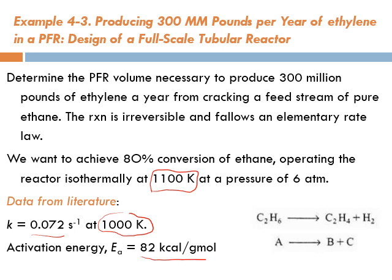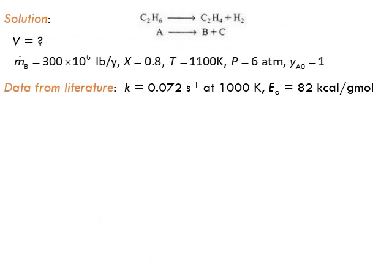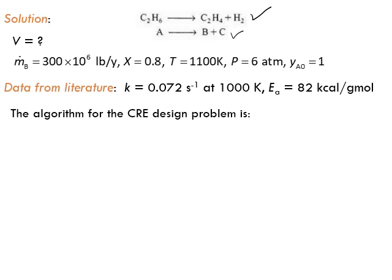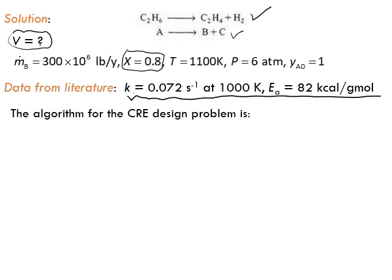Let's summarize the problem. The reaction is the cracking of ethane to ethylene and hydrogen. The desired conversion is given, and the required volume needs to be calculated. We have the kinetic data, including the rate law, which is first order, and all operating conditions are given.